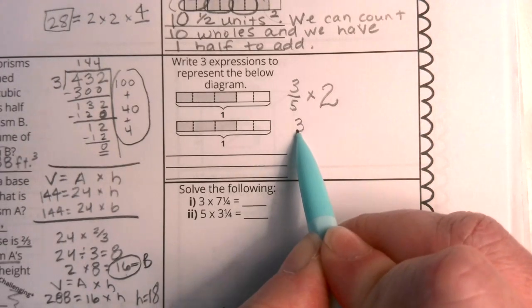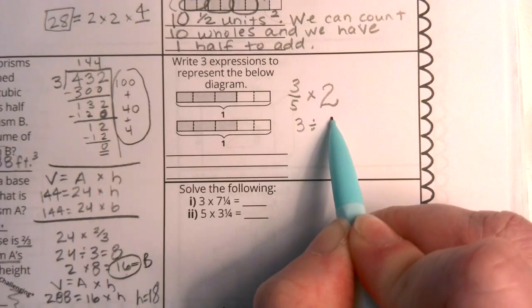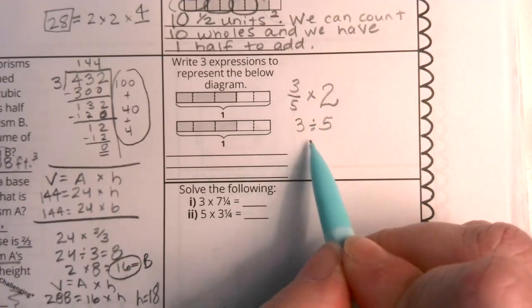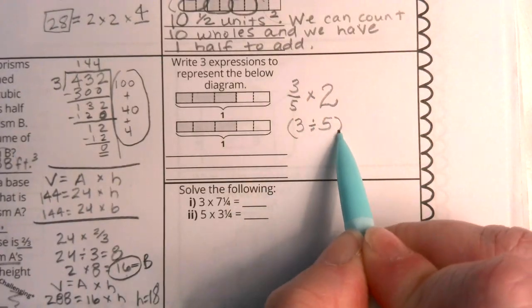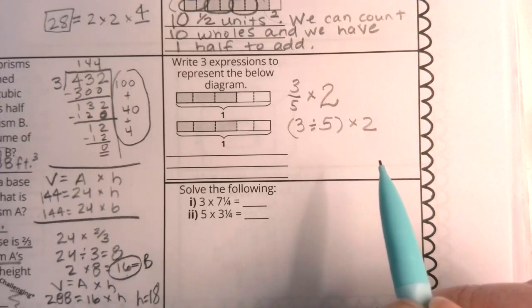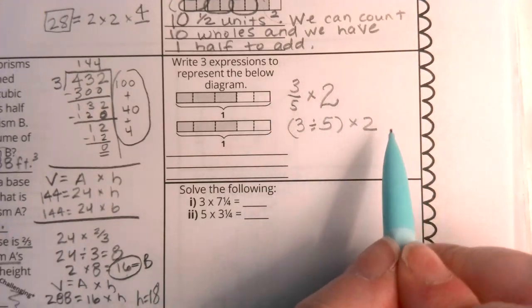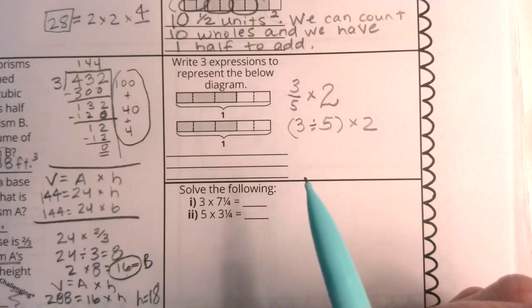Another way that I could show this is remembering that a fraction is a teeny-tiny division problem. So, really, I have three divided by five. Don't those mean the same thing? And, yes, then I'm going to multiply that by two. So, there's yet another way that we could show this.